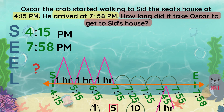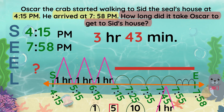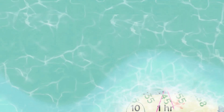Finally, we will use pebbles to hop: 7:56, 7:57, 7:58. To find the total elapsed time, I will add the mountains, hills, and pebbles. Oscar took 3 hours and 43 minutes. Thanks for watching, and happy solving!